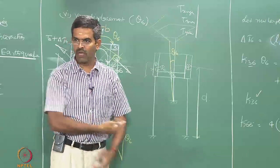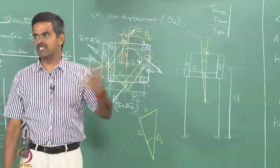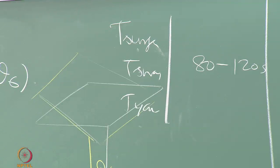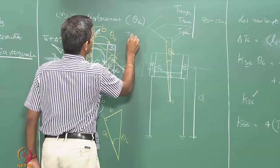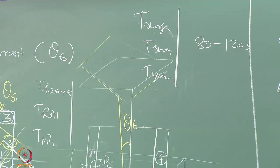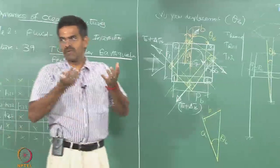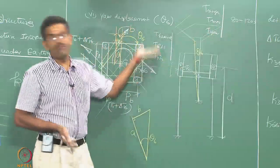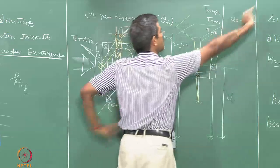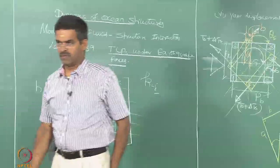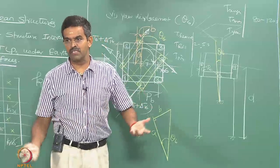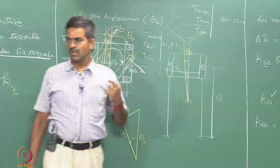Surge, sway, and yaw are in the horizontal plane — highly flexible, large period, about 80–120 seconds. On the other hand, heave, roll, and pitch occur in the vertical plane. Since TLP is very stiff in the vertical plane, those periods are very low: 2 to 5 seconds. There is a drastic bandwidth between flexible and stiff frequencies, which is why TLP is called a hybrid platform. Real sea waves range from 6 to 20 seconds, so they will never fall in the TLP's frequency band.